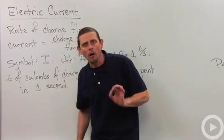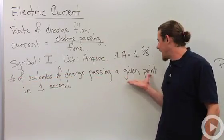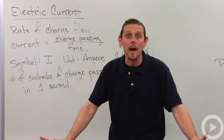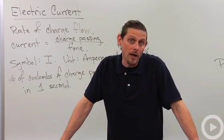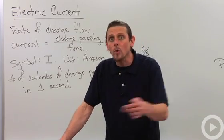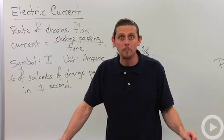All right so the current gives the number of Coulombs of charge passing a given point in one second. So if for example my current is three amps then that means that every second three Coulombs of charge pass by my given point.